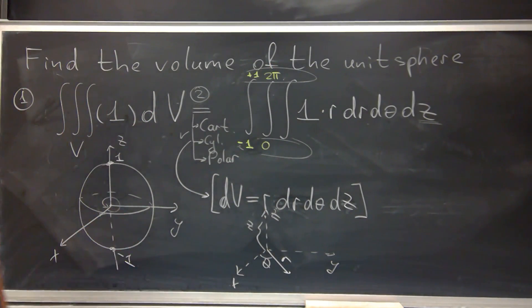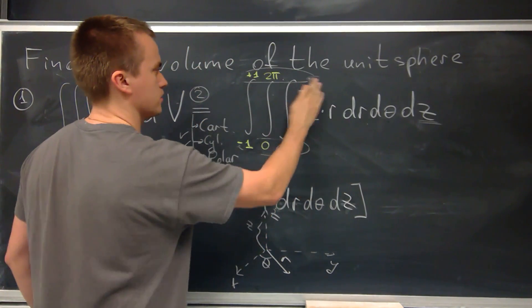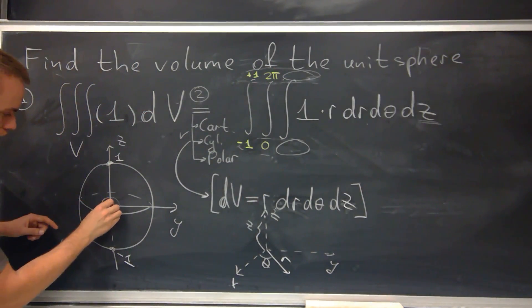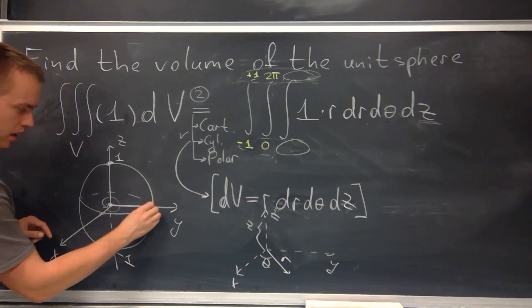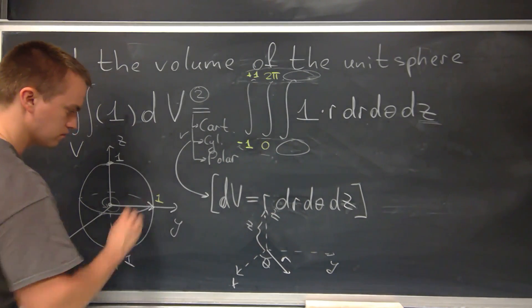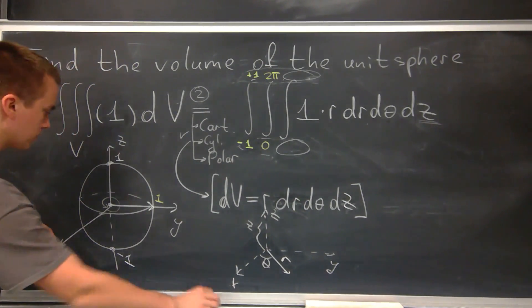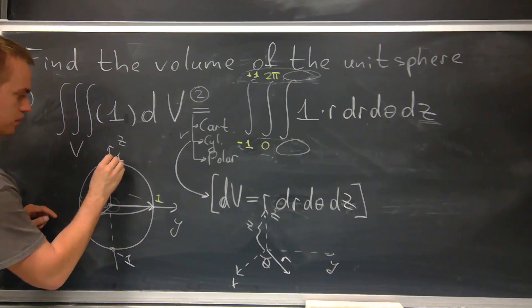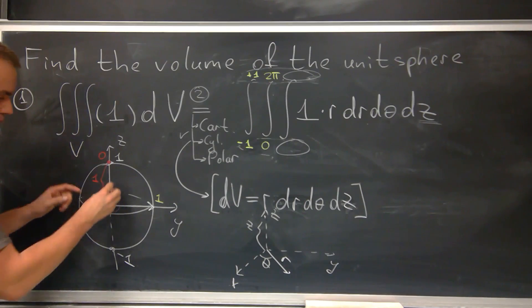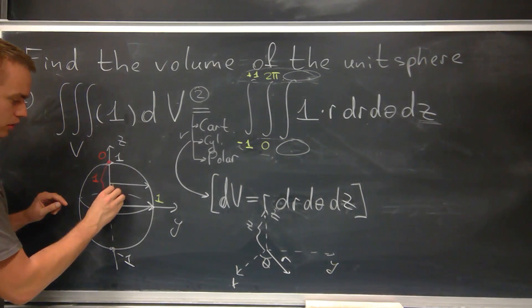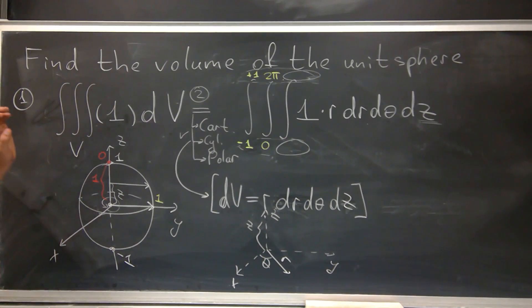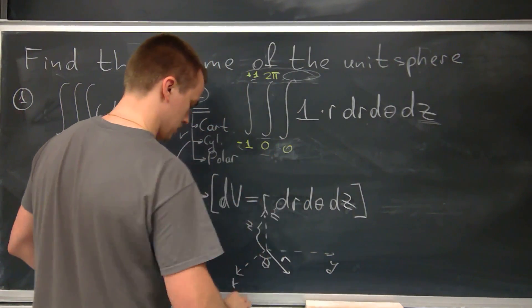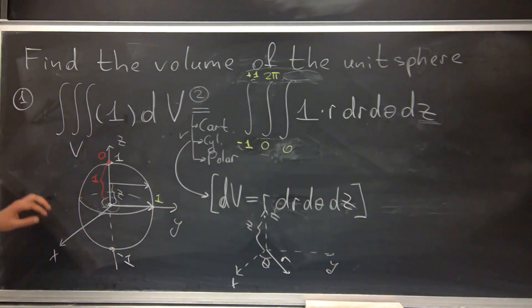The last bound — finding the bounds for r — is a little bit tricky. If I stay in the xy-plane, the maximum bound for r is equal to 1. But if I move up to z equals 1, then the upper bound for r becomes 0. So the radius depends on the height z. The lower bound for r is definitely 0.